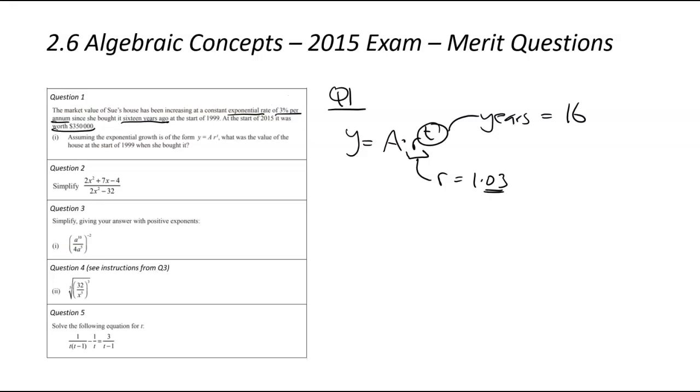So the r value is going to be equal to 1.03 and that 0.03 part relates to the 3% given to us in the question. If that was 10%, for example, it would be 1.1. If it was 2%, 1.02 and so on.